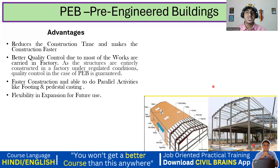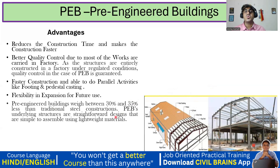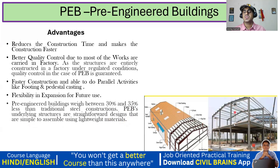Pre-engineered buildings weigh 30 to 35 percent less compared to conventional steel structures like truss systems. We'll understand why — it all depends on the bending moment diagram. PEB underlying structures are straightforward designs that are simple to assemble using lightweight materials. The sections used in PEB are lighter compared to conventional steel structures.